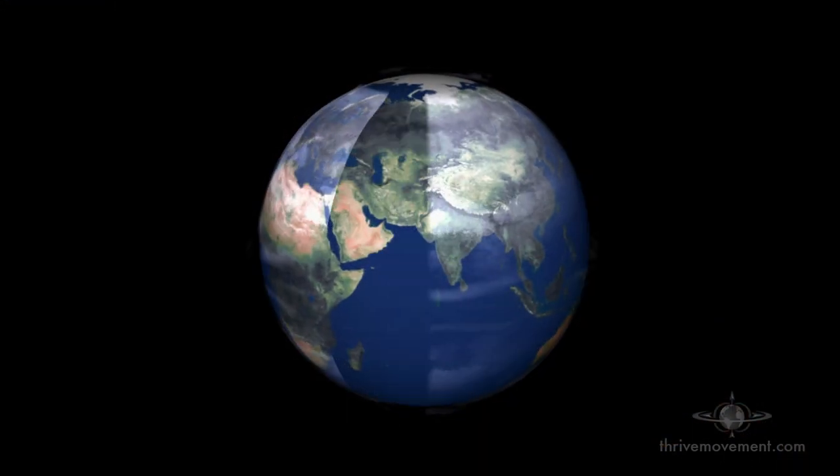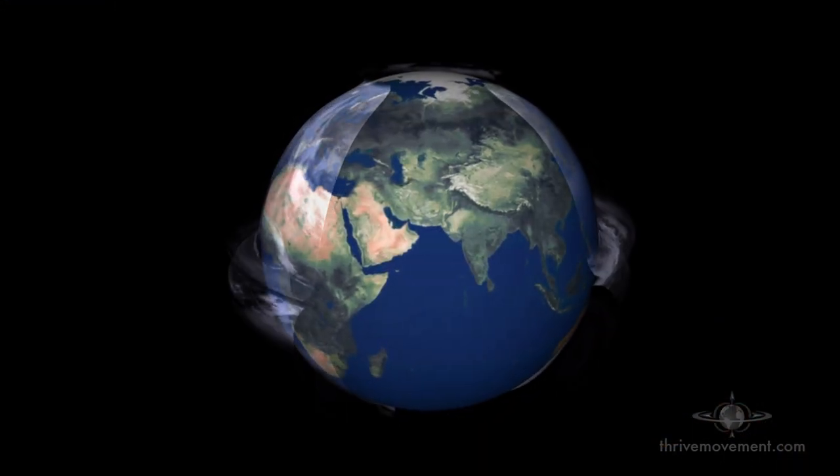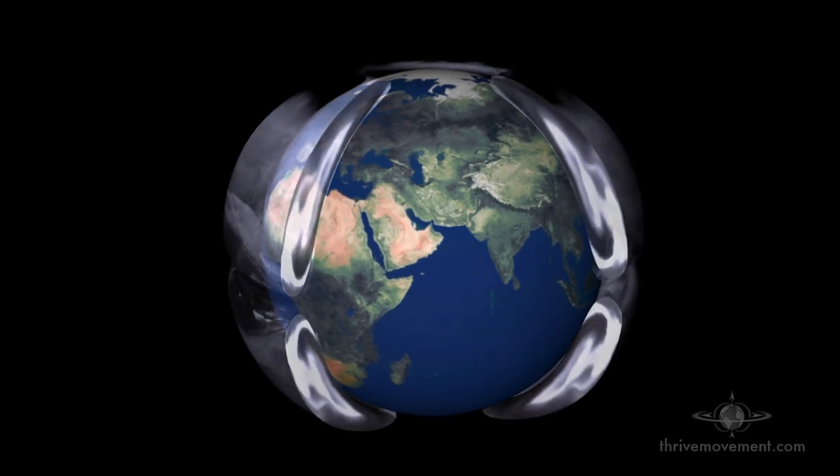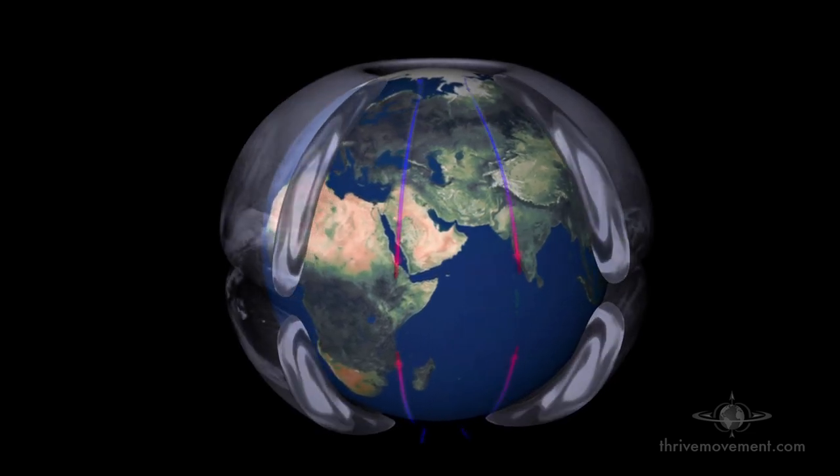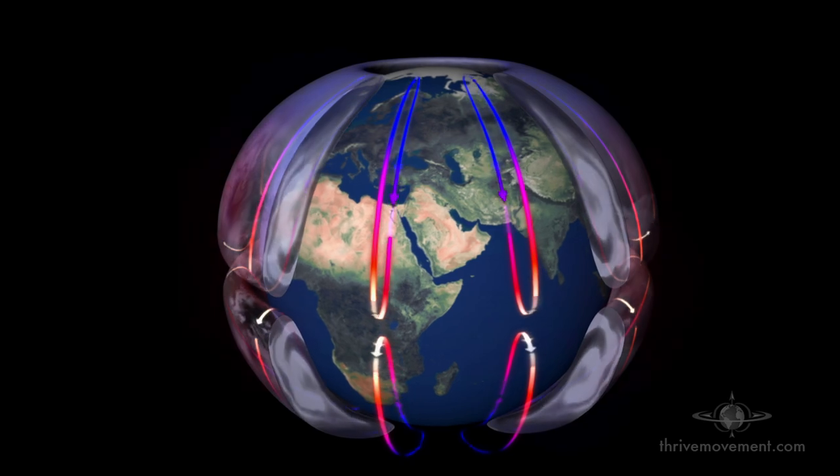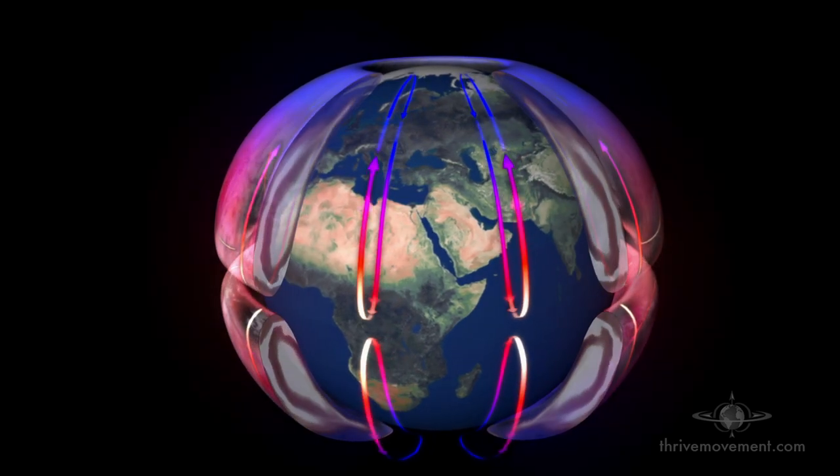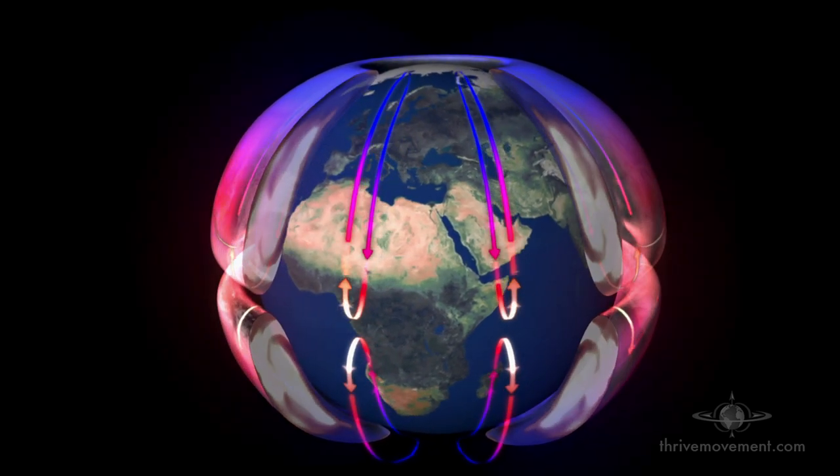That's the appropriate description even for the atmosphere of our planet. The weather goes from the North Pole down to the equator and then back up, from the South Pole up to the equator and then back down.